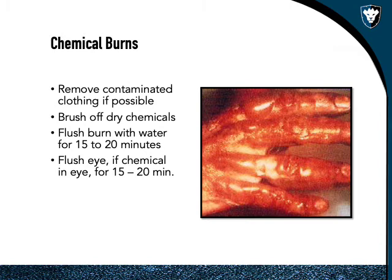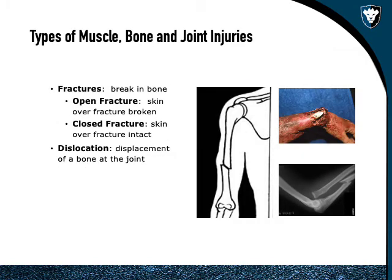For chemical burns, remove contaminated clothing to prevent the burn from spreading. Brush off any dry chemical first, then flush the burn with water for 15 to 20 minutes. Water is appropriate here; ice is not. If chemicals get in the eyes, flush for 15 to 20 minutes — that's the standard across the board for anything in the eyes.